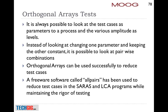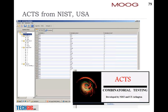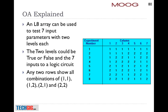Orthogonal arrays are a very nice concept for reducing test cases. We have used them to generate test cases for the LCA program, the SARS program, and for Boeing programs, generating very optimized test cases by running these orthogonal arrays. There is a free software called 'all pairs' — you can Google for it. There is also the ACTS software, A-C-T-S, from NIST USA, which can help you make orthogonal arrays or covering arrays. It is an excellent tool for test case design and worthwhile downloading and using in your test case procedures.